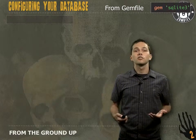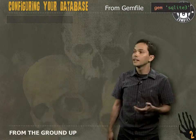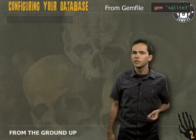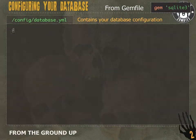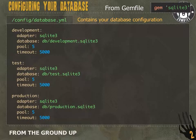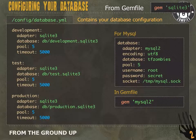By default, our Rails application uses a SQLite database — we can tell this because our gem dependencies include `gem 'sqlite3'`. But how is our database configured? That happens in `config/database.yml`. Inside, we have configurations for our development, test, and production environments. To switch to MySQL, we change the configuration to use the MySQL adapter, provide a database name, username, and password, replace the SQLite driver with `mysql2` in our Gemfile, run `bundle install`, and then we'd be using MySQL.